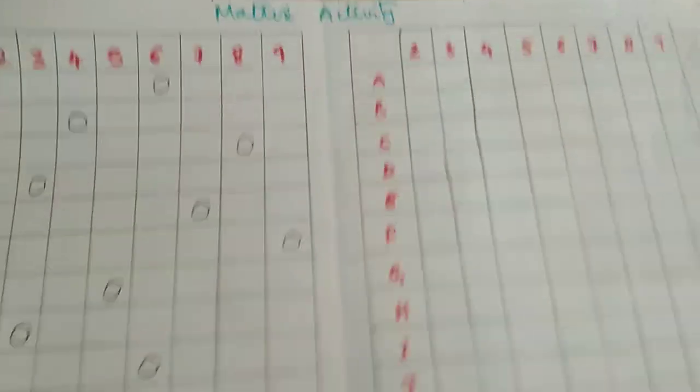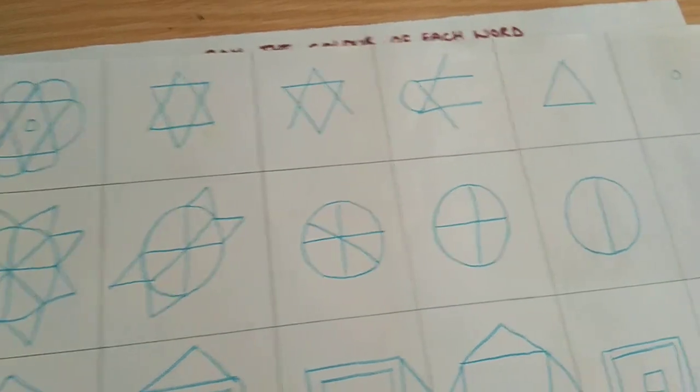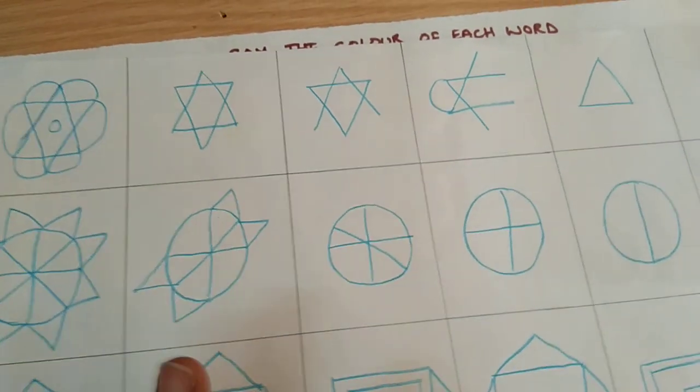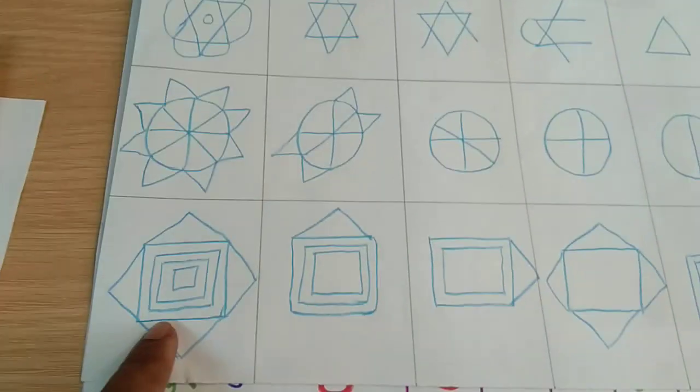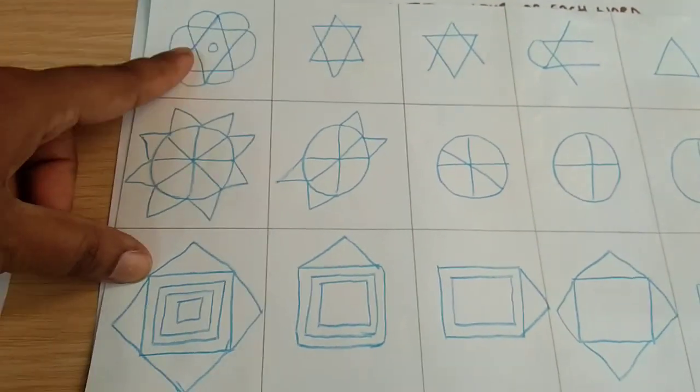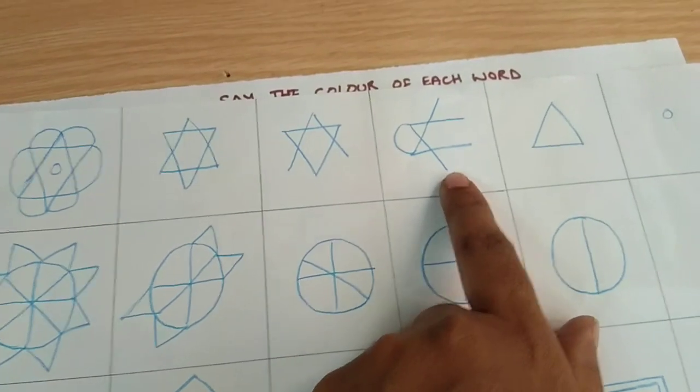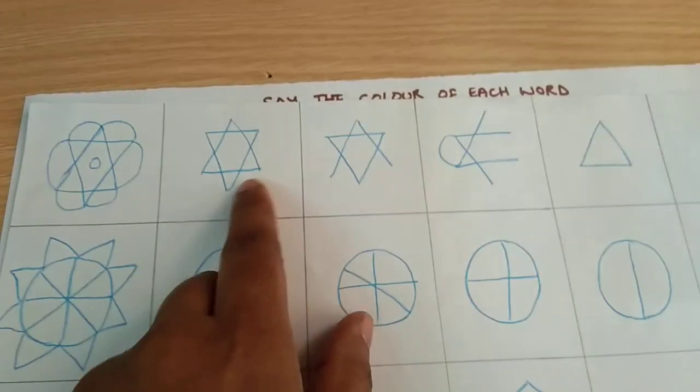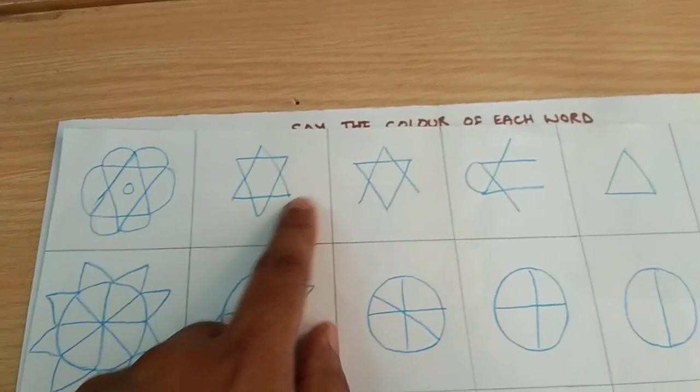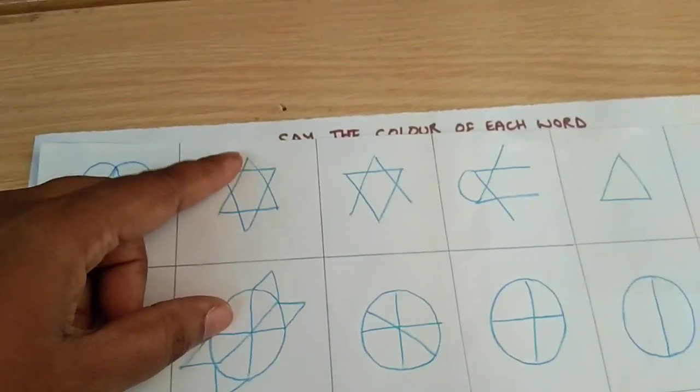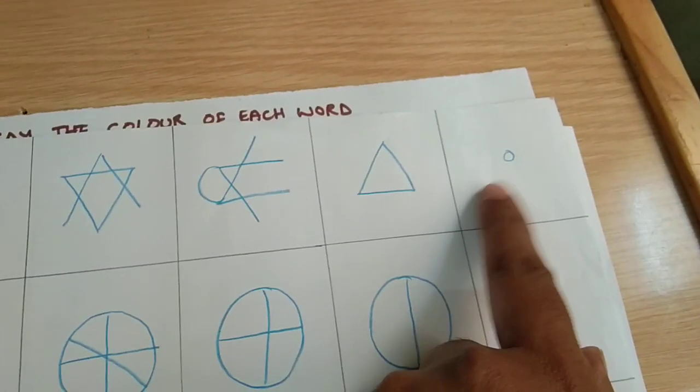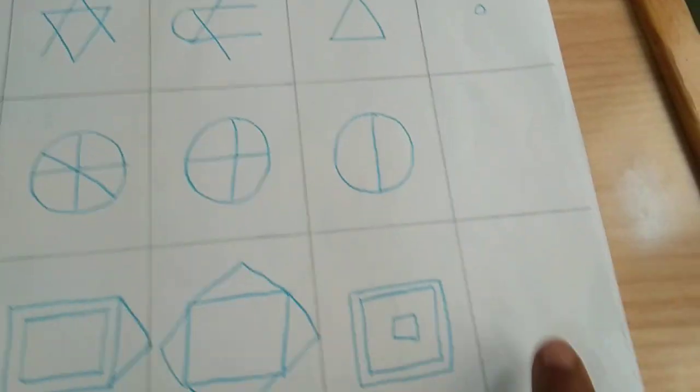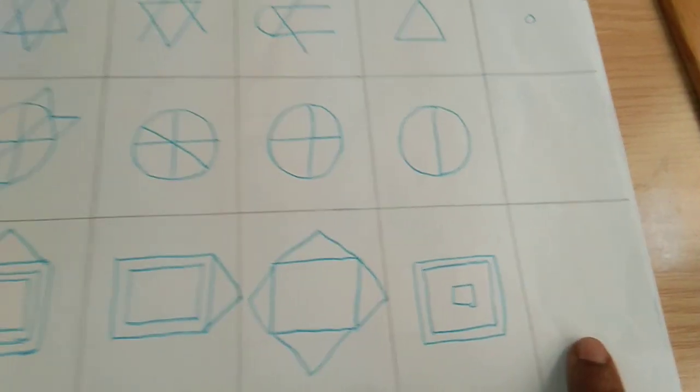This is another activity that I have copied from Sonali again. I've given three patterns here and under each box I have drawn it but haven't completed it. The child is going to fill the rest of the pattern whatever I have left from here. The last box I have left empty so here the child has to draw the complete pattern.